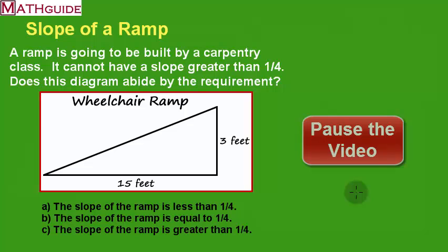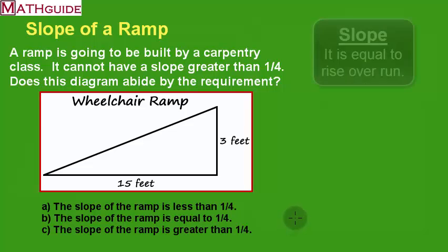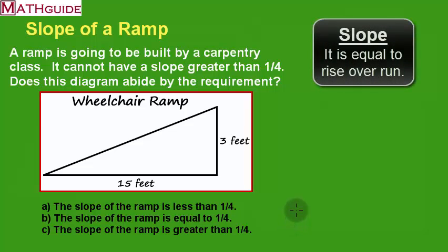All right, so now you're back. Let's talk about how to solve this problem. We've got the diagram, so the question is, what's the definition of slope? The definition of slope is rise over run.